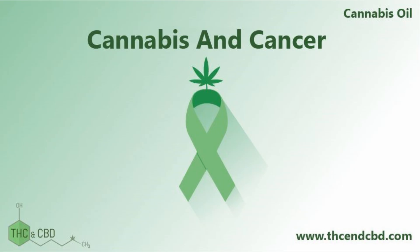THC is primarily metabolized in the liver by the CYP2C subfamily and is eliminated predominantly in the feces and less in the urine. 11-OH-THC is the principal metabolite formed when THC is ingested by mouth. Detectable levels of THC can be found in the urine for up to 12 days after use due to extensive enterohepatic recirculation of metabolites. However, this period could be longer for regular users.